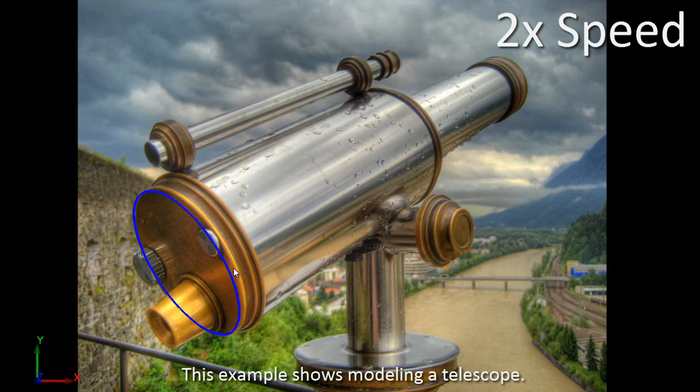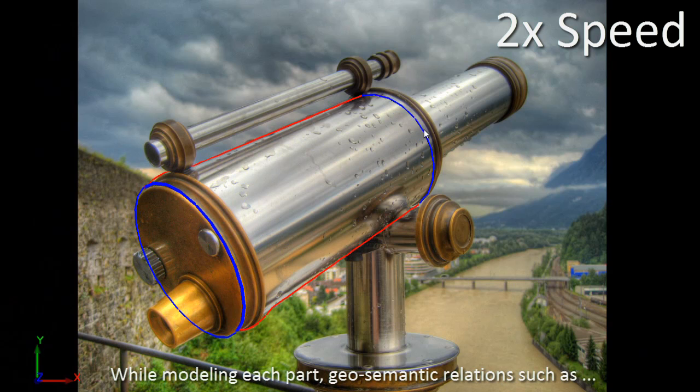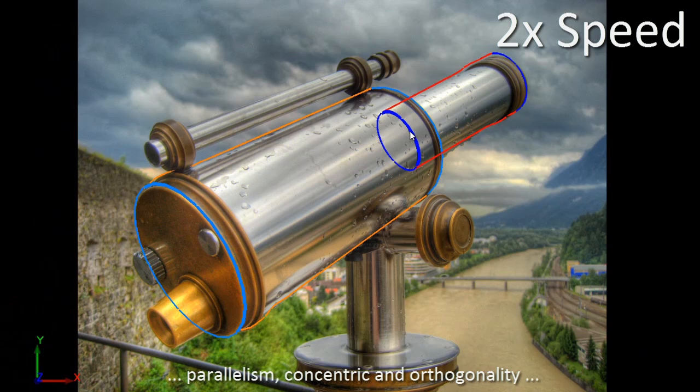This example shows modeling a telescope. While modeling each part, geosemantic relations such as parallelism, concentricity, and orthogonality are automatically recovered.